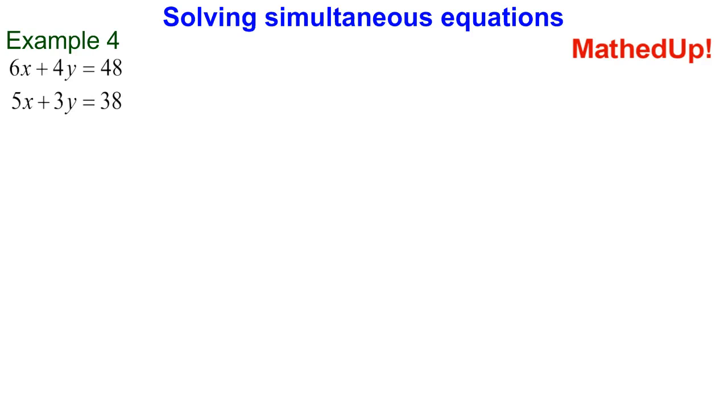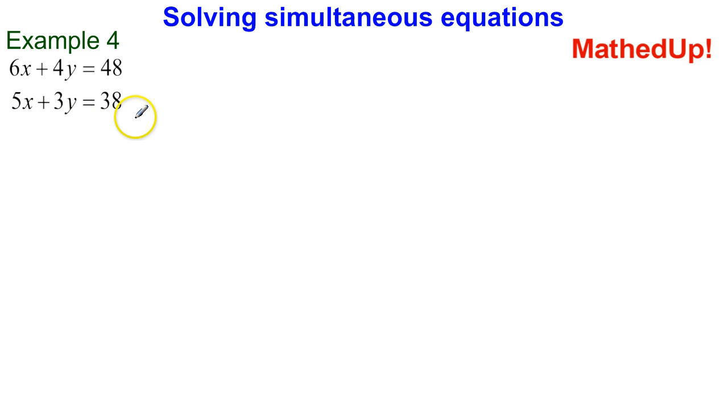Hi, this is our fourth video on solving simultaneous equations by elimination. This time our two equations are 6x plus 4y is equal to 48 and 5x plus 3y is equal to 38. So, can you spot what's going to be different this time?